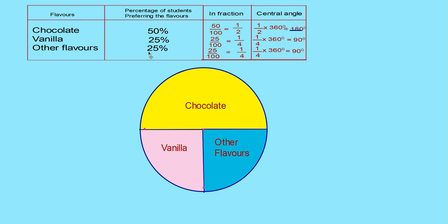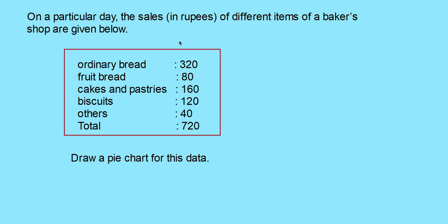This portion represents chocolate. This portion represents vanilla, and this portion represents other flavors. When data is given as percentages, you draw a pie chart by first converting the data to fractions, then finding the corresponding central angle, and then drawing accordingly.